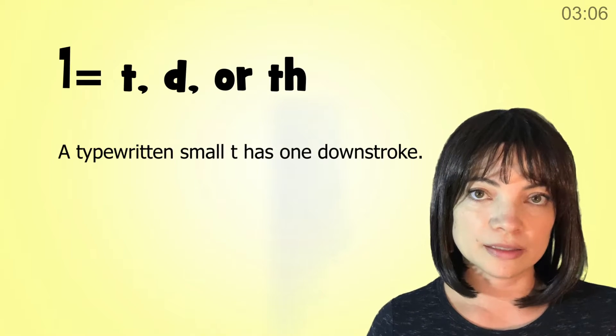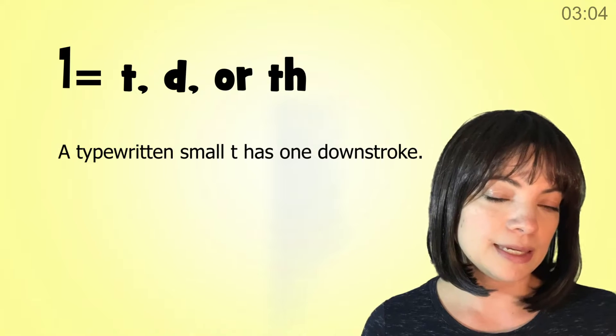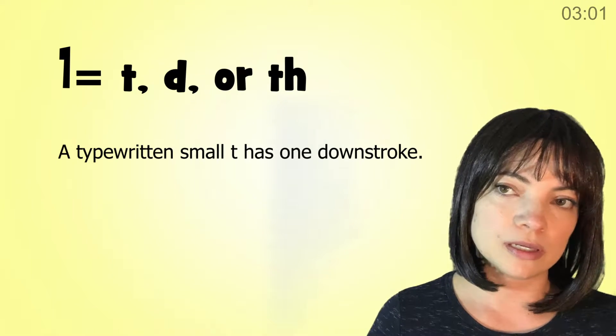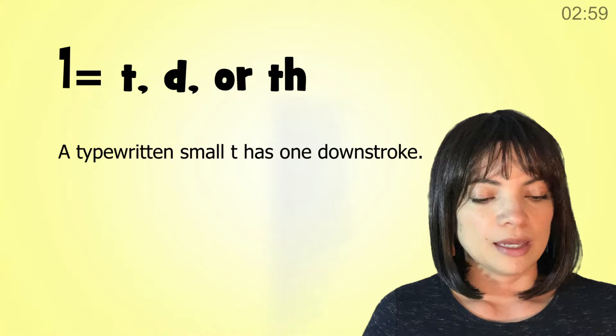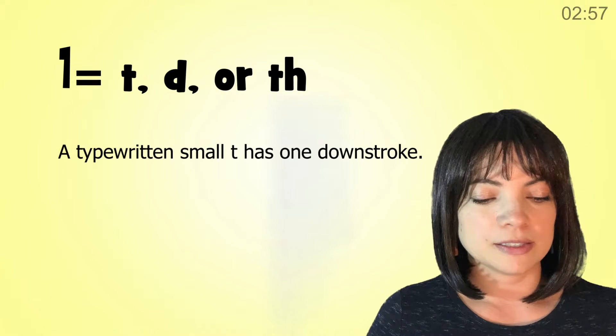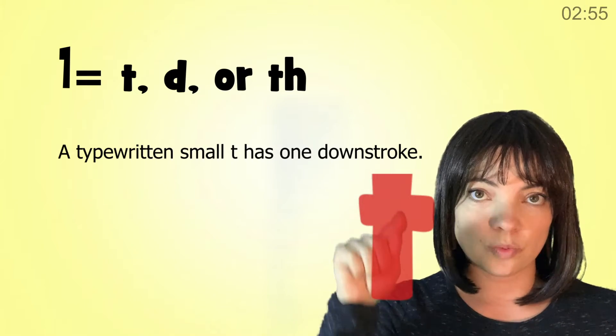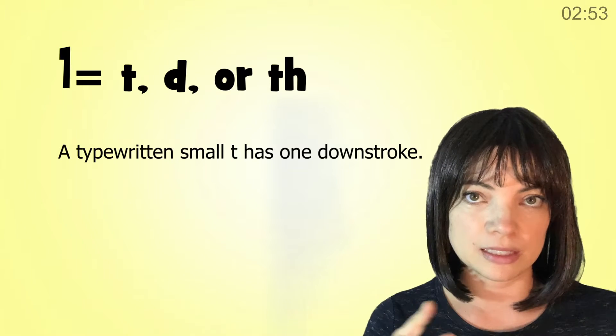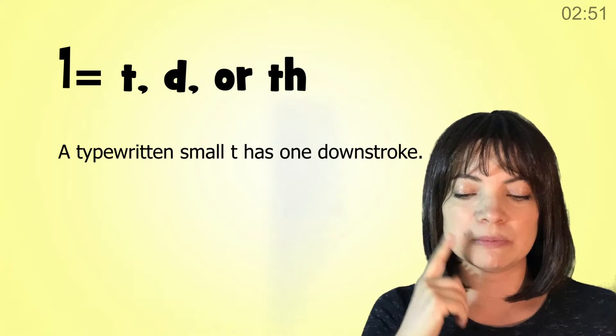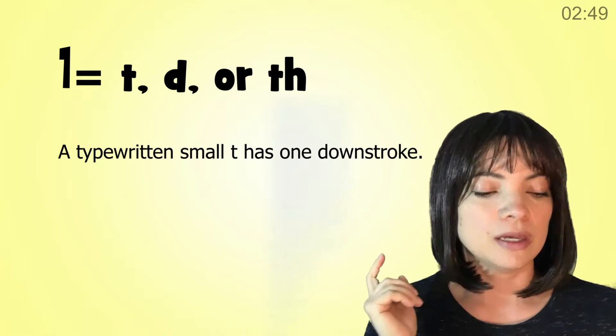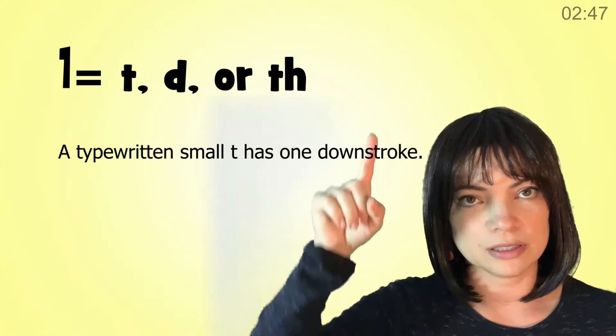Number one stands for the letters T, D, or TH. And the way you can remember it is that a typewritten small t has one downstroke, and these sound similar. Notice the tip of your tongue as you say them. T, d, th is one.